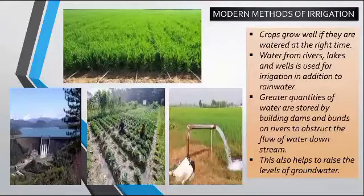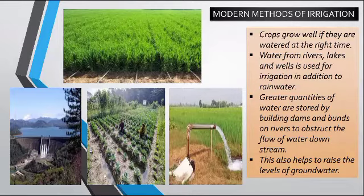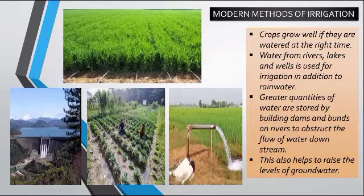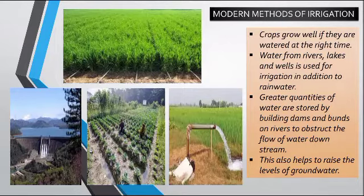The next point is how crops get water, which is called irrigation. Modern methods of irrigation are now being used. Water availability for crops can be through rain water, wells, rivers, lakes, and so on, providing crops with an ample amount of water for growth. There are also dams built and bunds on rivers that help water to accumulate at a certain place. This water then flows downstream to help crops get a better yield of production and also helps raise the level of ground water.